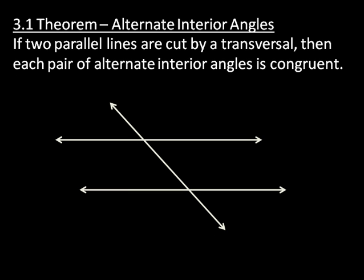Next, we have theorem 3.1, more importantly known as the alternate interior angles theorem. It says if two parallel lines are cut by a transversal, then each pair of alternate interior angles is congruent. What that means is the alternate interior angles will have the same measure. This angle and this angle are alternate interior angles — they have the same measure. This angle and this angle, also alternate interior angles, those two in yellow, have the same measure.